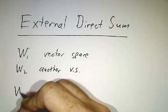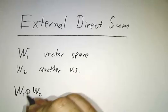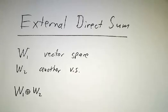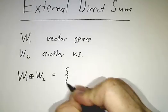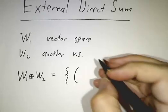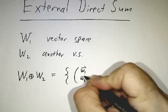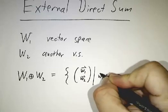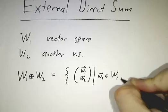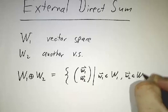Now, the direct sum, the external direct sum, which is written like this - we put a plus sign inside of a circle - is a new vector space. This is a space of all ordered pairs (w₁, w₂) such that little w₁ is in the first vector space and little w₂ is in the second vector space.